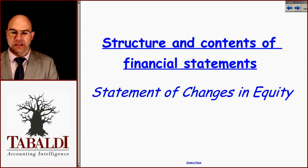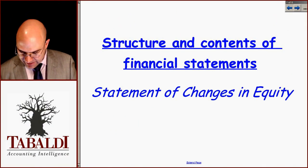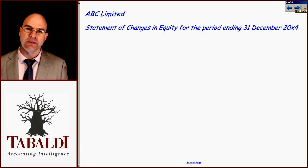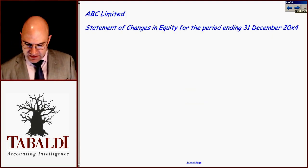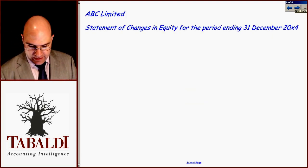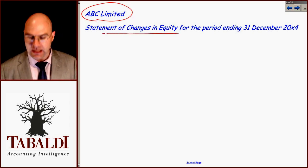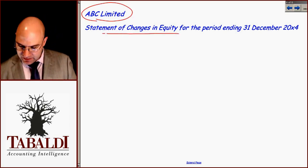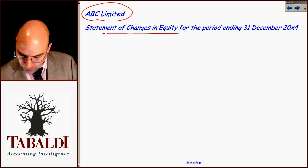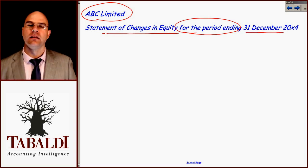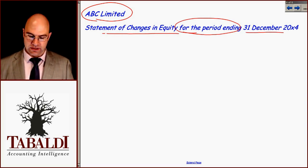The last statement of the big three is the statement of changes in equity. This one is quite a different layout, but take note I still have the company name, I still name the actual statement, and it's for the period ending this reporting date, 31st of December.